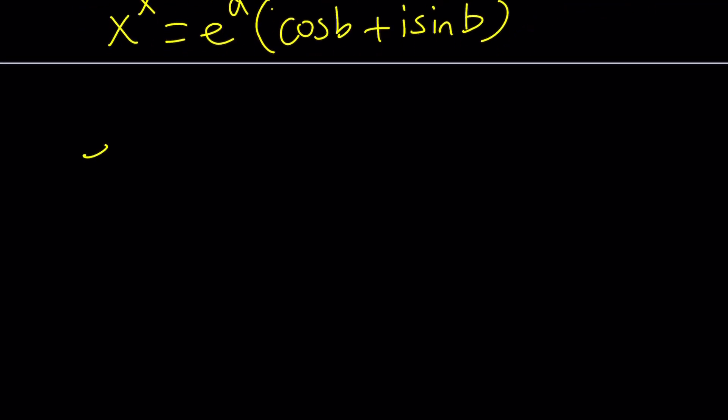We have e to the power negative pi plus i times ln 4. In this case, this happens to be our a and this happens to be our b. Okay? Now, we can go ahead and separate this, basically. We can split it up into e to the power negative pi times e to the power i times ln 4.